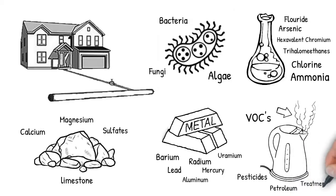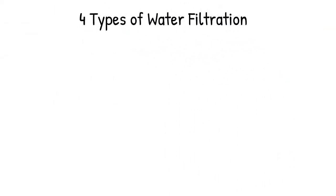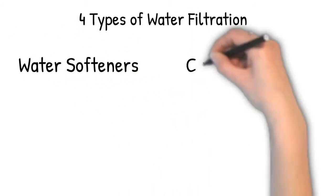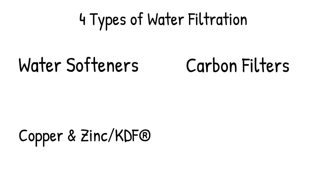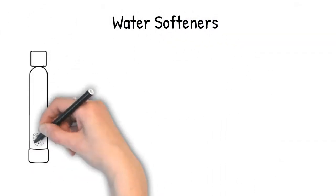There are four main types of water filtration: water softeners, carbon filters, copper and zinc filters known as KDF, and reverse osmosis. Water softeners reduce calcium and magnesium minerals and a few other contaminants.